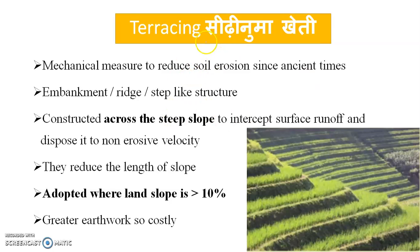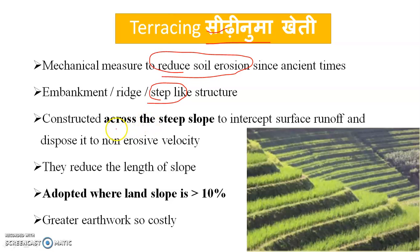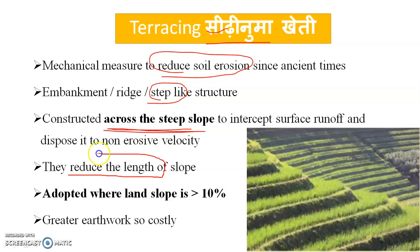As discussed, terracing is basically to reduce soil erosion. It is a stable structure and, same as bunding, it will be done across the slope. No soil conservation structure can be made along the slope because that would supplement the length of slope rather than cut it. When you make it across the slope, ultimately it reduces the length of slope, and land slope must be greater than 10%.